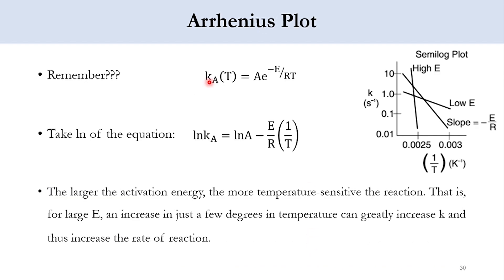We had seen that KA(T), which is a function of temperature, is equal to A times e to the power of minus E over RT. This is the Arrhenius equation and it is used to predict the value of the rate constant. Taking the natural log of that equation, it becomes: ln(KA) equals ln(A) minus E over R times 1 over T.